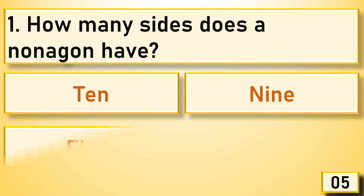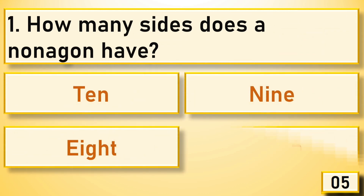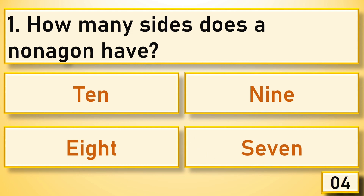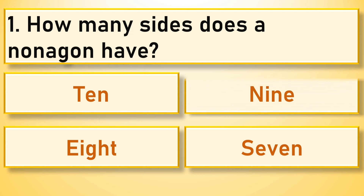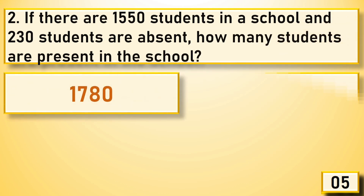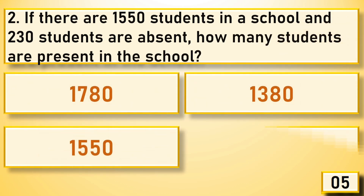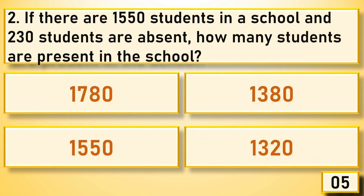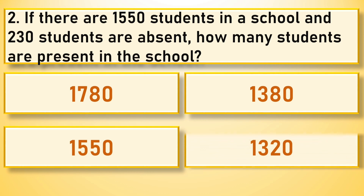How many sides does a nonagon have? Nine. If there are 1,550 students in a school and 230 students are absent, how many students are present in the school? 1,320.